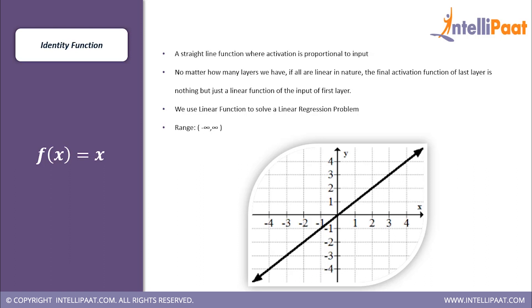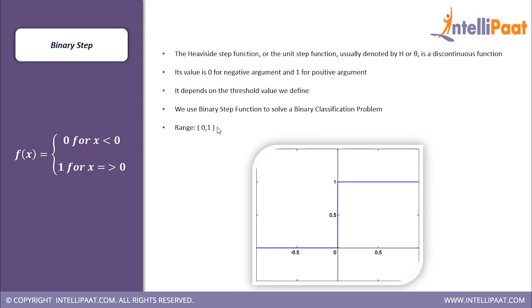There are many types of activation functions. Starting with the identity function — it gives out the same output as the input. No matter how many layers we have, if all activations are identity functions, the final output of the last layer would be the same as the input given to the first layer. Its range goes from minus infinity to plus infinity. Next, the binary step function — denoted by h or theta — is a discontinuous function: if input is less than zero the output is zero; if input is equal to or greater than zero the output is one. This makes it suitable for binary classification.